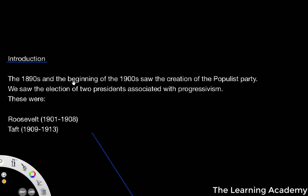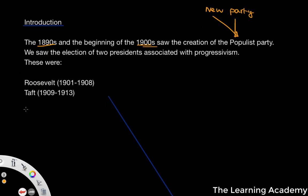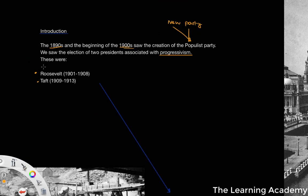As an introduction, in the 1890s and the 1900s, we saw the creation of this new party, which was the populist party in the USA. When it comes to the ideas of progressivism and progressive politics, we see two presidents that were mainly associated with those ideas: Roosevelt and Taft. Roosevelt was in 1901 to 1908, and Taft was in 1909 to 1913. We're going to talk about Roosevelt and Taft in this video and the next, as well as look at McKinley and the influence he had in the period between the 1890s and when he died in the 1900s.